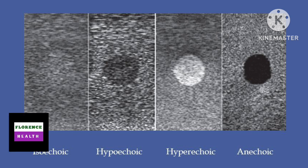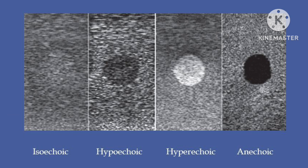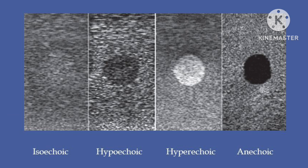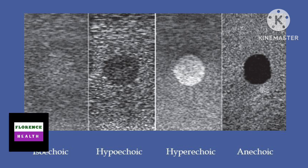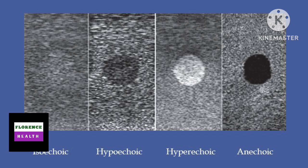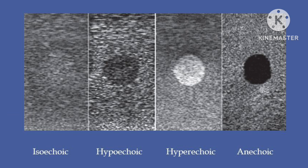On the second image, the lesion is hypoechoic — that means the lesion has less or minimum level of echoes. On the third image, the lesion is hyperechoic, meaning it is more bright or more white in color due to having more level of echoes. On the fourth image, the lesion is anechoic — purely jet black or dark in color, due to the presence of no echoes inside.